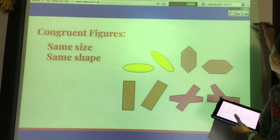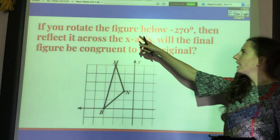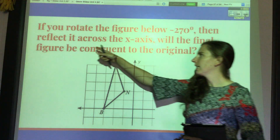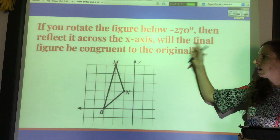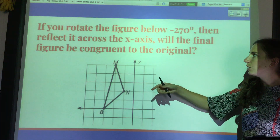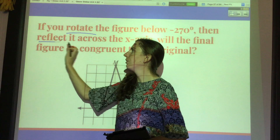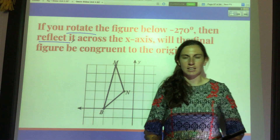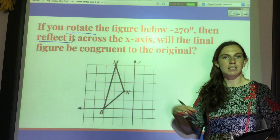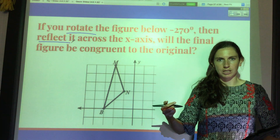For example, you might be asked a problem like this, and it's actually very straightforward. If you rotate the figure below negative 270 degrees and then reflect it across the x-axis, will the final figure be congruent to the original? You don't need to do all that work. It was a rotation and a reflection — no dilations. If you rotate and then reflect, yes, it is still going to be congruent to the original because those are rigid transformations.